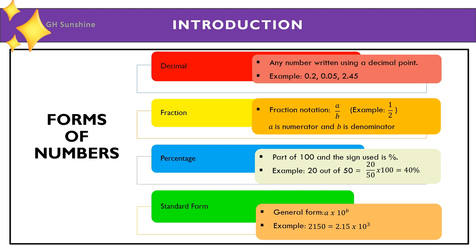For example, the number 2150 in standard form is equal to 2.15 times 10 to the power of 3.